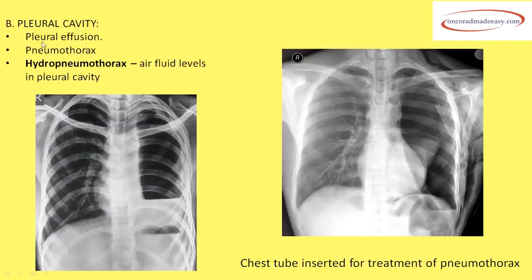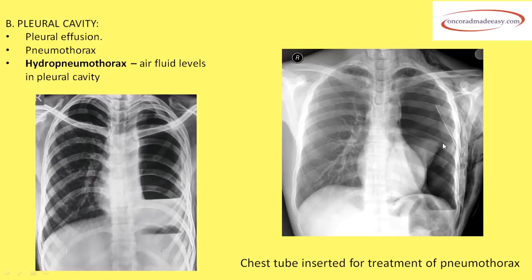Both fluid and air can be present together in the pleural cavity — this is hydropneumothorax. It appears as air in the pleural cavity along with effusion, producing air-fluid levels. Treatment of hydropneumothorax or pneumothorax is done by inserting a chest tube, which is placed into the pneumothorax to help in treatment of the patient.